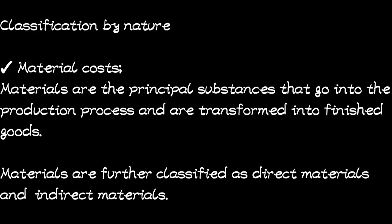Another classification of costs is classification by nature. Under this, the first one is material costs. Materials are those substances that go into the production process and are transformed into finished goods. Materials are classified into two: direct materials and indirect materials. These are the costs incurred in acquiring those materials.